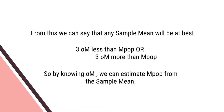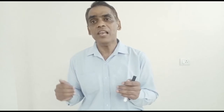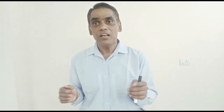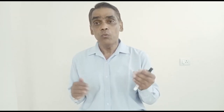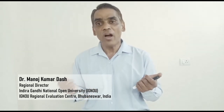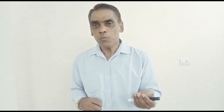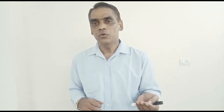From this, we can say that a sample mean will be at best 3 Sigma M less than or 3 Sigma M more than the population mean. By knowing Sigma M, the standard error of mean, we can estimate the population mean from the sample mean. This is what is called statistical inference — knowing the sample mean, how to estimate the population mean within a particular degree of significance. You are going to respond to the question forum, review the document, and finally assess yourself with a small self-assessment test. I hope you are enjoying the course — all the best.